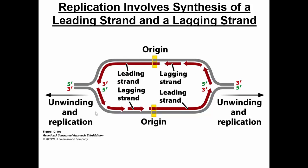Zooming in on a replication bubble, the strand of DNA that is replicated continuously is called the leading strand. You can see that this strand is going five prime to three prime, so DNA polymerase can keep replicating it. The opposite strand is called the lagging strand. Here, DNA polymerase could not go in the direction the fork is moving because it would be the wrong way — DNA polymerase has to be going five prime to three prime in reference to the new strand.